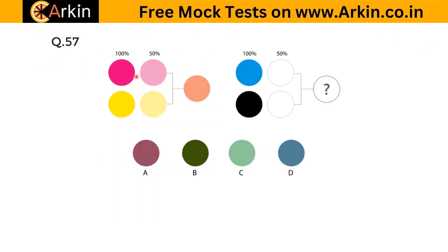In this question, this is 50% of this color, this is 50% lighter than this color, and adding the two gives this result. Similarly, adding the 50% lighter version of this color and the 50% lighter version of black — what color results? Options A and B are not correct because they contain other colors, whereas we are only adding blue and black. Option C has a slight greenish tint, so C is wrong. The correct answer is D.